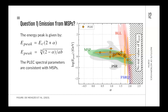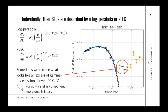The spectra are very consistent with millisecond pulsar emission, leaving less room for dark matter annihilation scenarios. Individual SEDs of globular clusters are typically well described by a power law with exponential cutoff or a log parabola. Occasionally we even see very high-energy excesses that could be a stellar component emitting gamma rays — more details on that in the final slides.